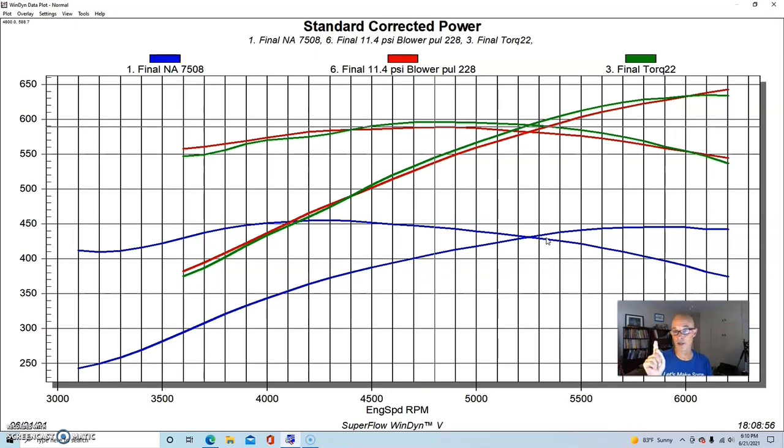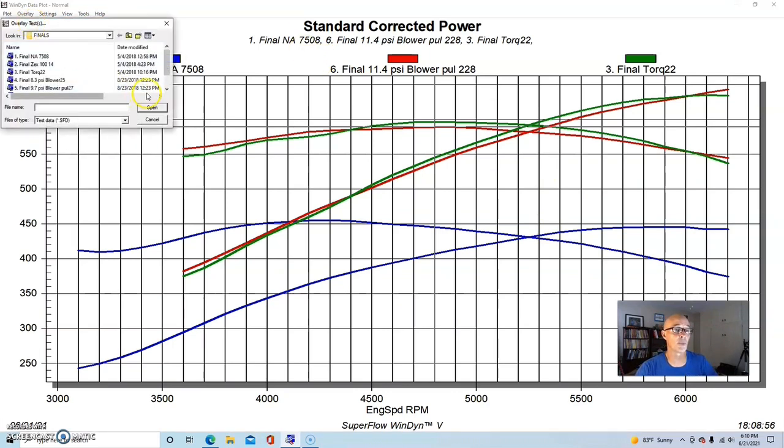Let's go and take a look at the boost curves now associated with these changes. But before we do that, we made one final run with the 671 that allowed the power output to go up quite a bit. We kept the pulley ratios the same, but what we did was run E85.